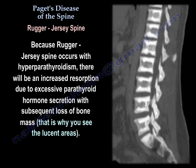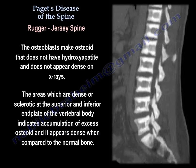The osteoblasts make osteoid that does not have hydroxyapatite and does not appear dense on x-rays, which is why you see lucent areas. The areas which are dense or sclerotic at the superior and inferior end plates of the vertebral body indicate accumulation of excess osteoid, which appears dense when compared to normal bone.